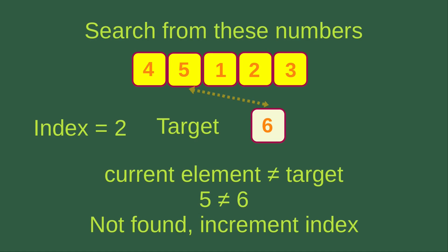We have to increment the index again. Now the index is three. I check the third element with the target, which is six. The current element is one, while the target is six — they are not equal to each other, and we have not found the target from the list yet. We have to increment the index.